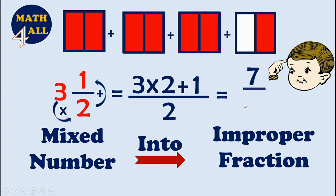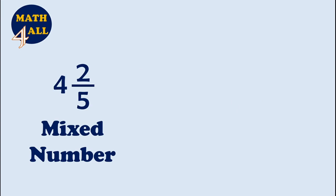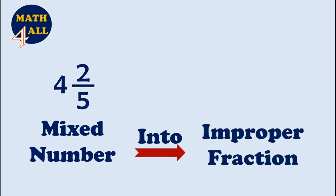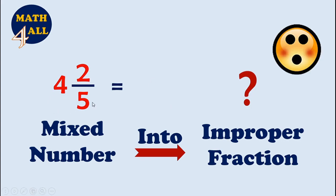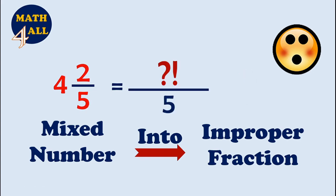Seven-halves. Can you convert this mixed number into an improper fraction without a model? Let's read it: four and two-fifths. Can you answer this? First, let's write the denominator — it will be five.